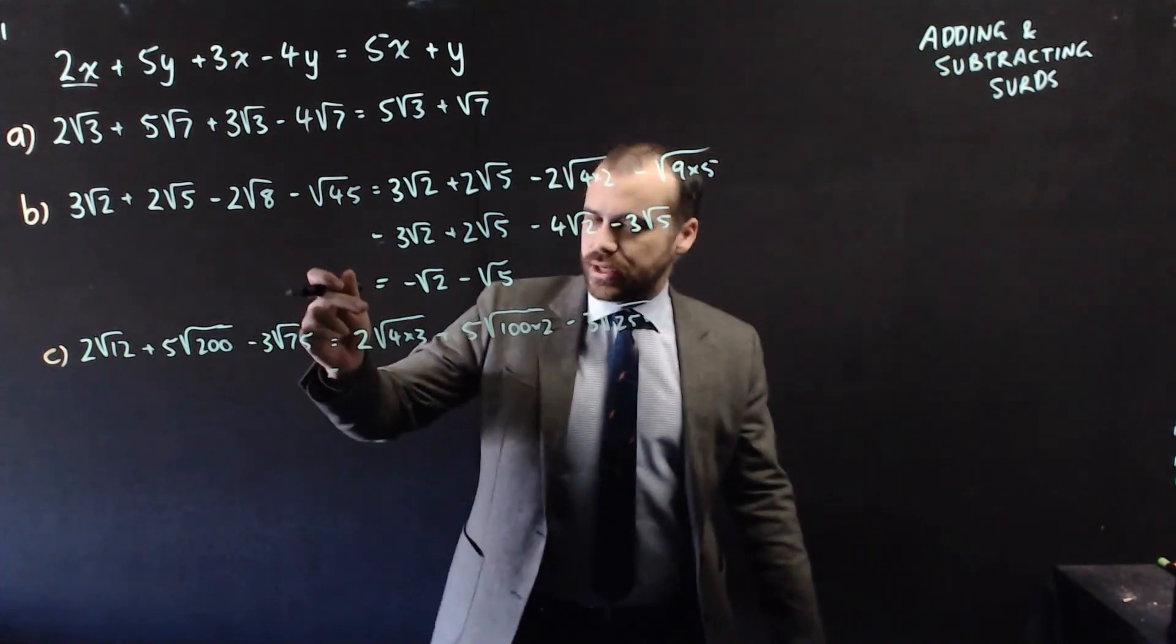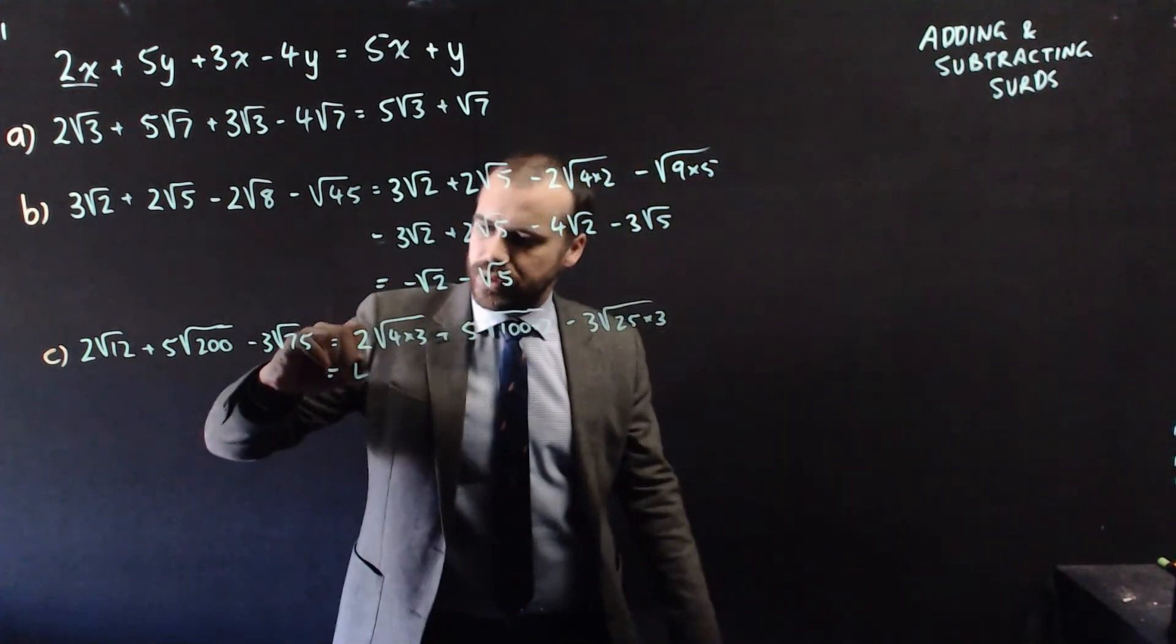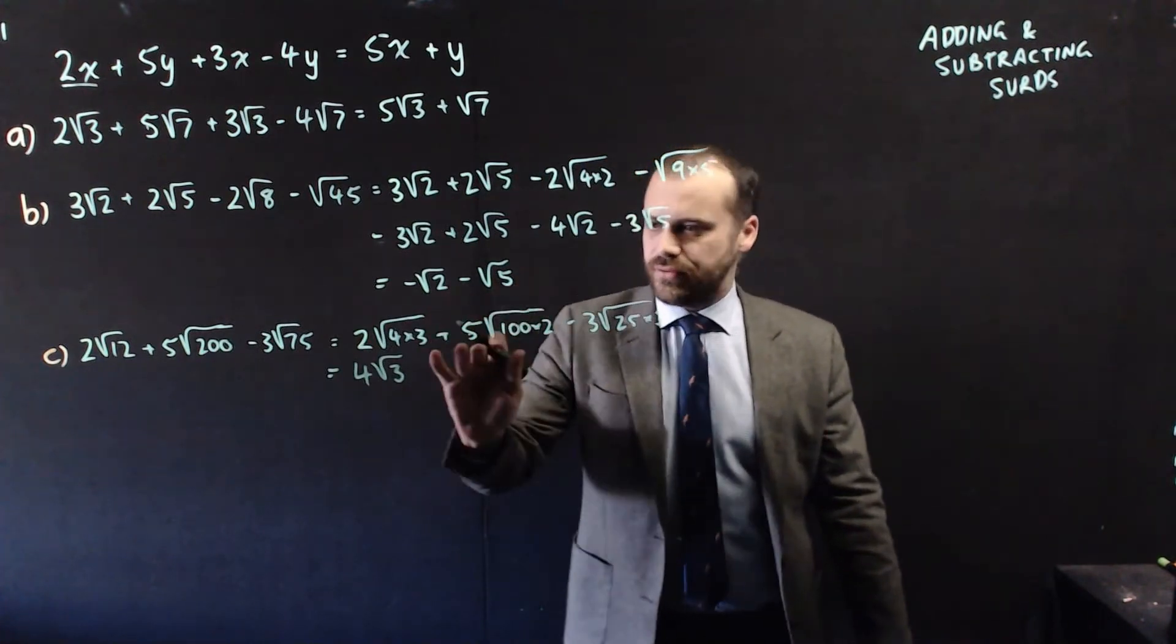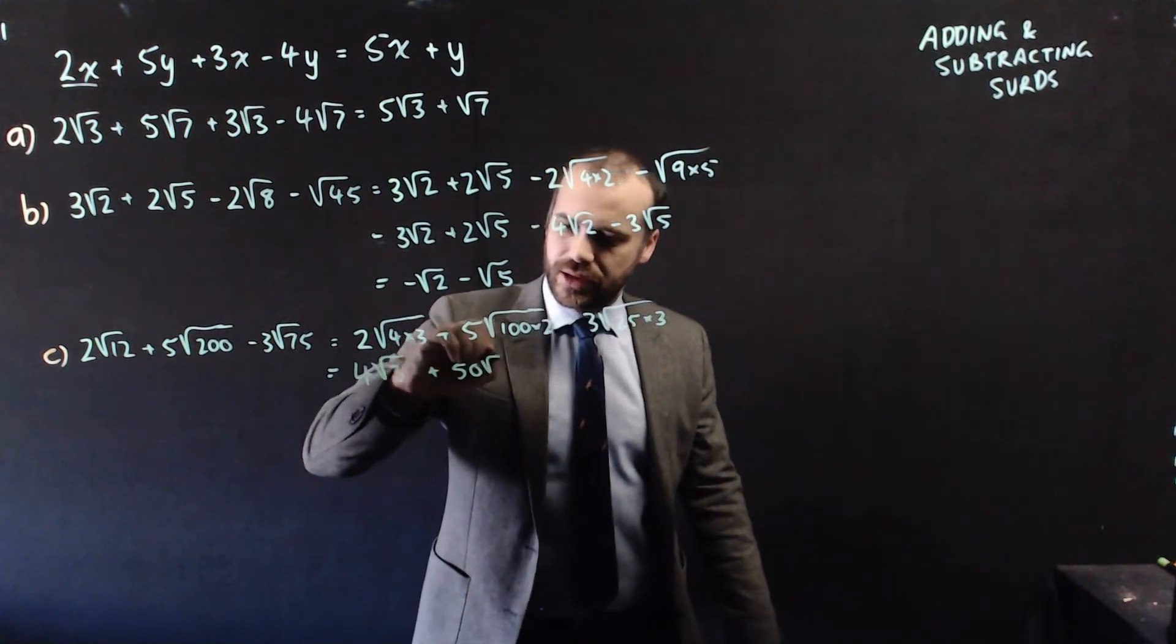Alright, so the 4 is going to come out as a 2. 2 times the 2 that comes out is going to be 4. We get 4 root 3 there. The 100 is going to come out as a 10. 5 times the 10 is going to be 50. So 50 and then a root 2.